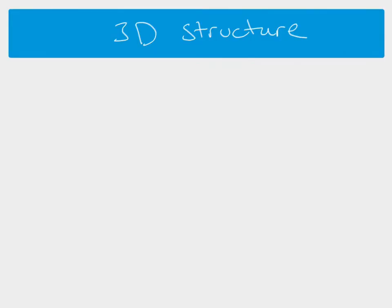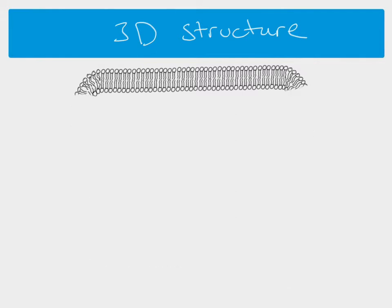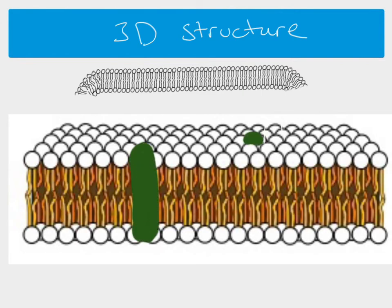First of all let's just remind ourselves about the 3D structure of a cell surface membrane. We've got phospholipids and those phospholipids form a bilayer. So there's our bilayer — we can imagine that we've got our phospholipid bilayer all around a cell. And if we just take one section of that cell surface membrane and we look at it as a 3D structure it might look something like this.